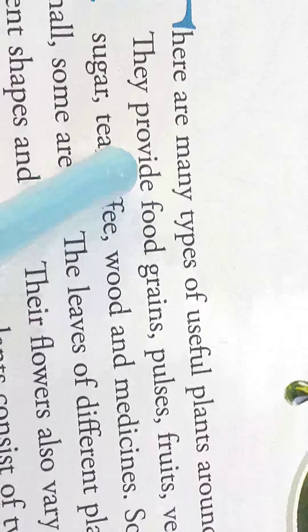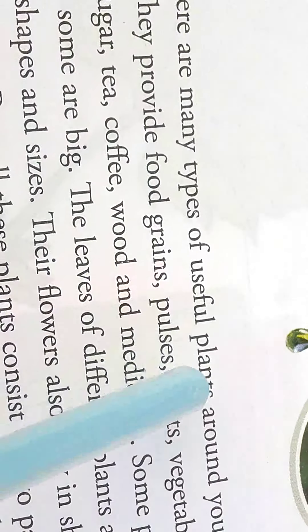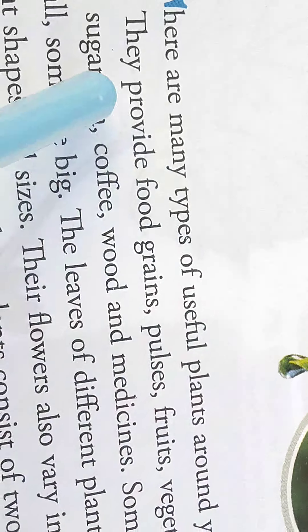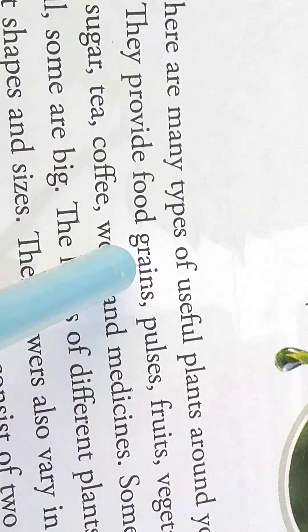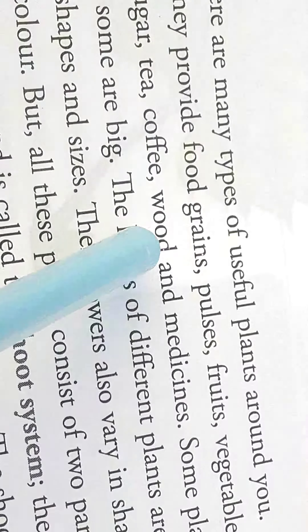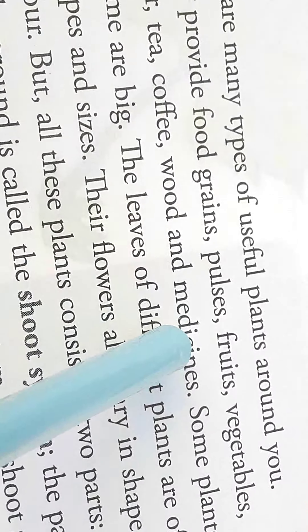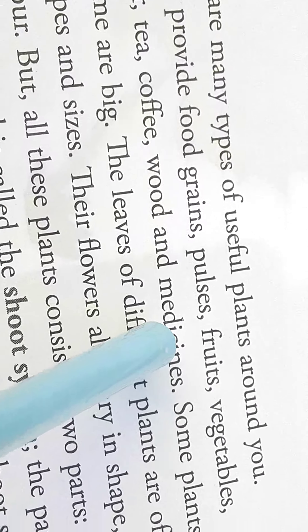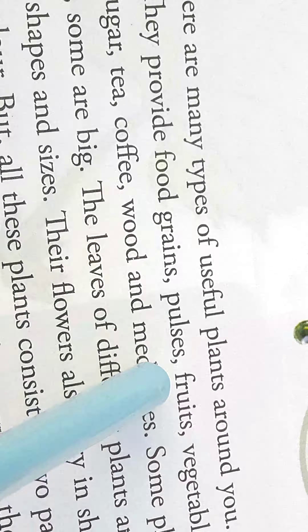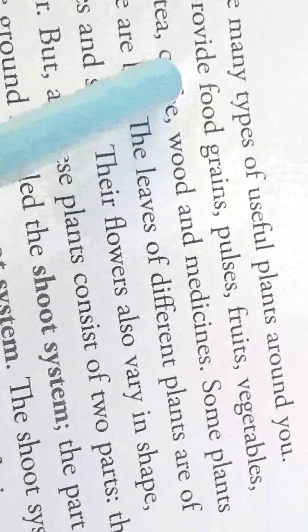There are many types of useful plants around you. They provide food grains, pulses, fruits, vegetables, sugar, tea, coffee, wood and medicines. So normally we get different things from plants.